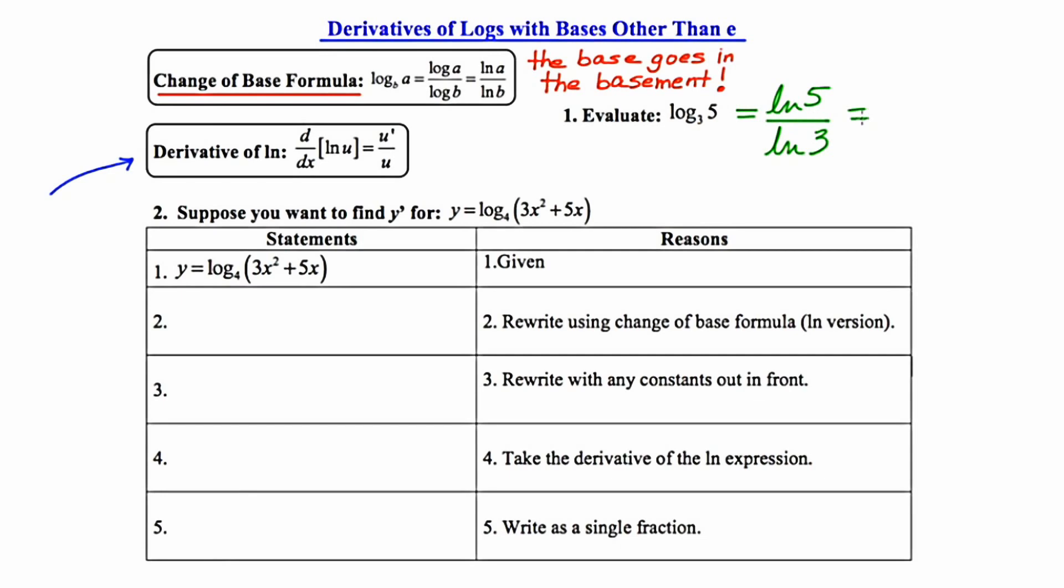I'm going to go ahead and use natural logs and rewrite this as the natural log of 5 over the natural log of 3. Now I can go to my calculator and just quickly evaluate this. The natural log of 5 over the natural log of 3, and I end up getting 1.465. So that little review of the change of base formula is going to be very handy for our examples here.